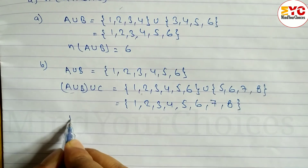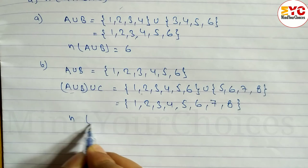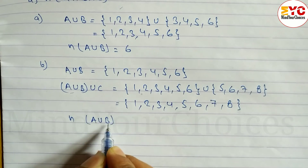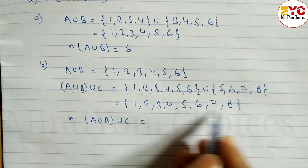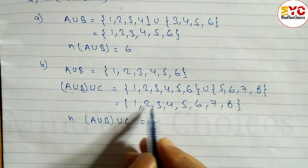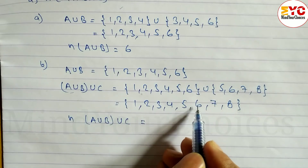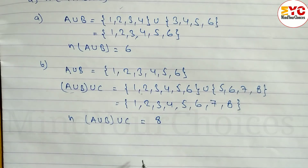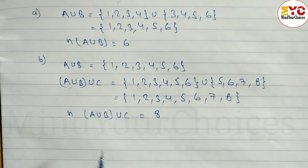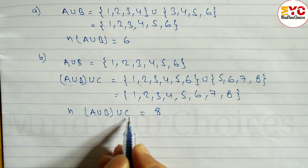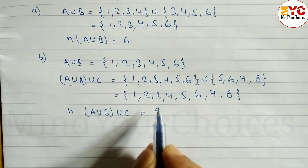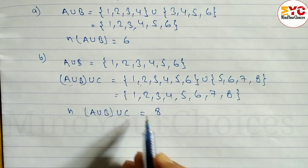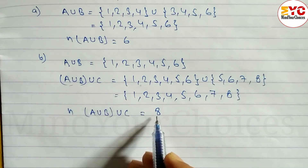Now, A union B union C is equal to {1, 2, 3, 4, 5, 6, 7, 8}. So the cardinal number of A∪B∪C — how many elements are there? There are 8 elements. So N(A∪B∪C) = 8.